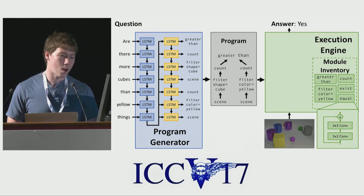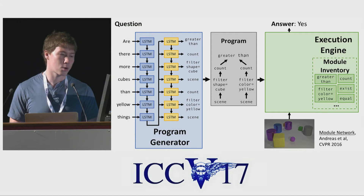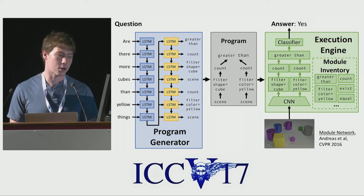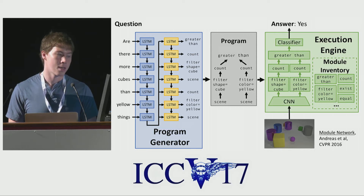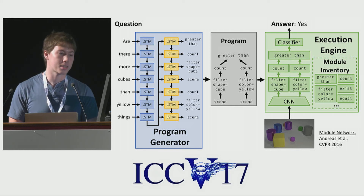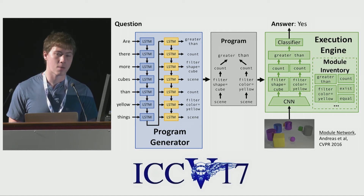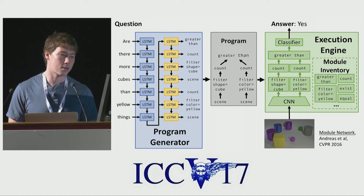Now once we have our modules and our program, we use our modules to assemble a dynamic neural network architecture that mirrors the structure of the predicted program. In this way, for every program that we predict, we end up with a separate new custom architecture for answering that question. This architecture then forms a single feedforward network that we can pass our image through and eventually get the answer to the question.